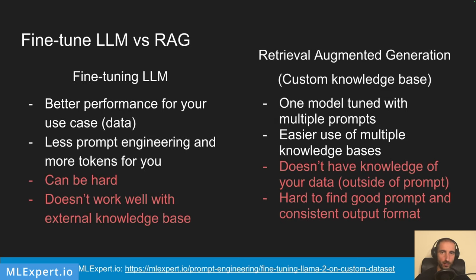When you're using large language models with your own data, you basically have two approaches. On the left we have the fine-tuning approach, and on the right we have retrieval augmented generation (RAG), which is probably the more popular approach since it requires just a prompt where you input some parts of your text right within the prompt.